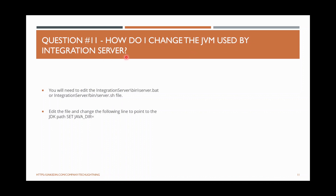How do I change the JVM used by Integration Server? When you install Integration Server, it uses the default JVM that comes with the product installation. If you want to change to another Java available on the same machine, you can edit server.bat on Windows or server.sh on Linux, and change the Java directory to the path where you want to configure it.